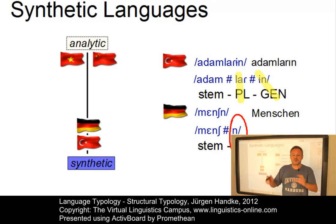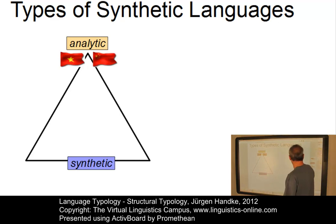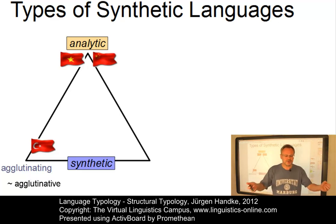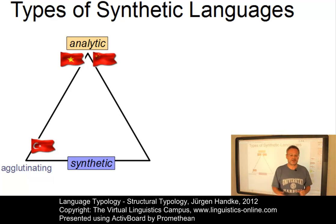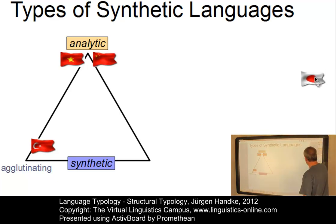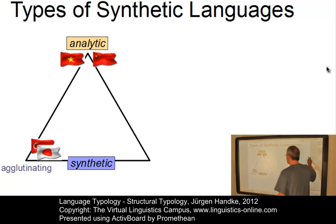Depending on the function of the morphs, we can define two types of synthetic language. On the one hand, we have the so-called agglutinating synthetic languages, such as Turkish, where the morphs are by and large functionally unambiguous. In such an agglutinating language, a word may consist of more than one morph, but the boundaries between morphs are always clear-cut. Furthermore, a given morph has a mostly invariant shape, making identification straightforward. Another well-known example of an agglutinating language is Japanese, which is also highly synthetic.